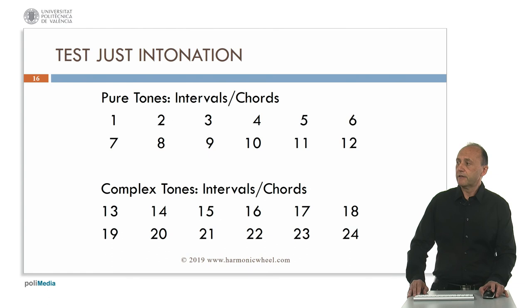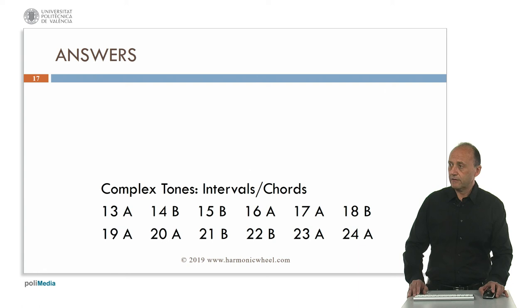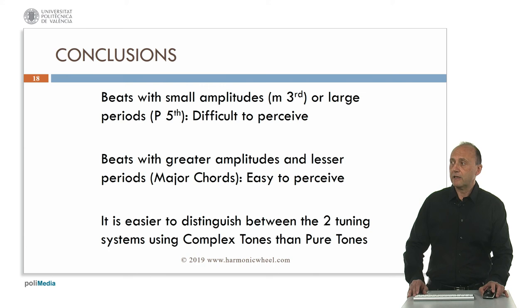That's the end of the test. Here are the right answers so that you can compare with your own answers. As conclusions, we can say that beats with small amplitudes, as in a minor third interval, or with large periods, as in perfect fifth intervals, those beats are difficult to perceive. On the contrary, beats with greater amplitudes and lesser periods, as in the case of major chords, are easy to perceive.